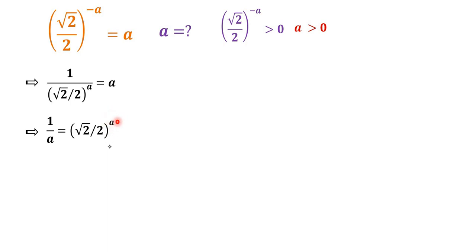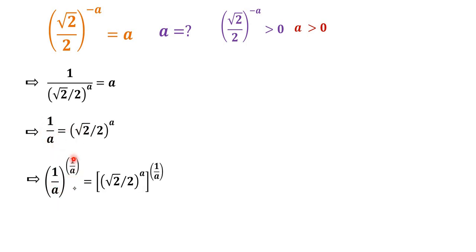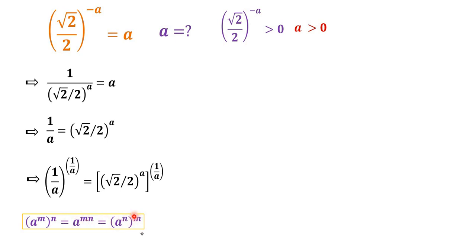Here the power is a. To get rid of the power on the right side, we take the power of 1 over a for both sides. We have (1 over a) to the power of 1 over a, equal to (square root 2 over 2) to the power of a, then to the power of 1 over a. Applying the rule (a^m)^n = a^(mn), we get a times 1 over a equals 1, so (1 over a) to the power of 1 over a is equal to square root 2 over 2.